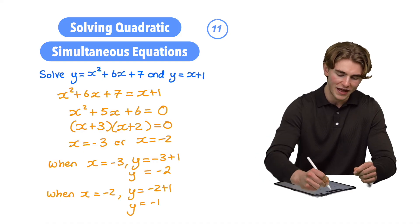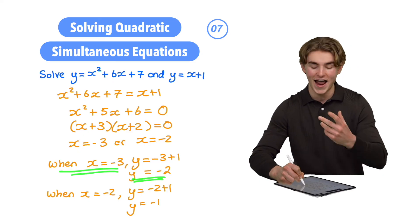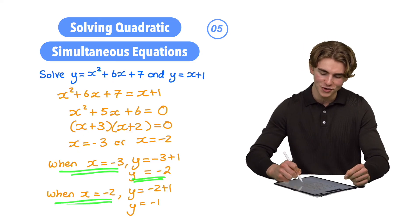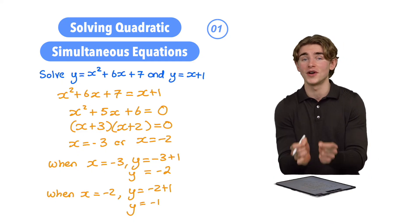So we now have our two pairs of answers. We have when x = -3, y = -2, and when x = -2, y = -1. That is how to solve quadratic simultaneous equations.